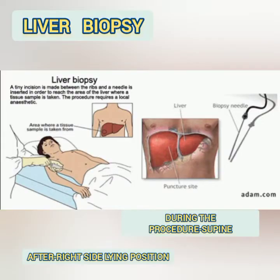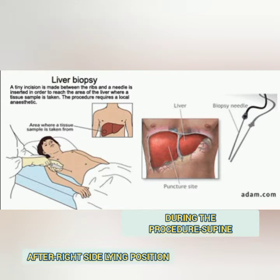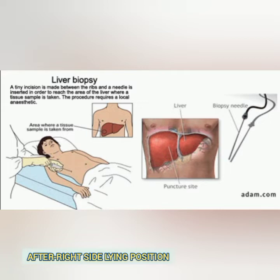The next procedure is liver biopsy. During the procedure, we will provide the patient with a supine position, with the right side of the upper abdomen exposed, the right arm raised and extended behind and overhead at the shoulder — this helps to expose the area. After the procedure, we place the patient in right-side lying with a pillow under the puncture site to apply pressure and minimize bleeding.